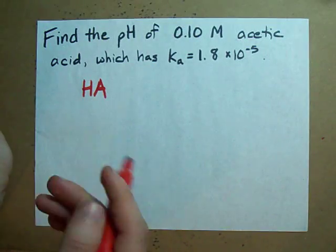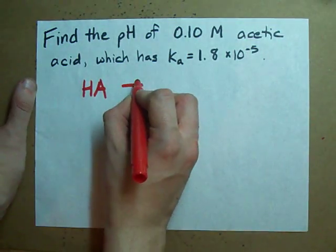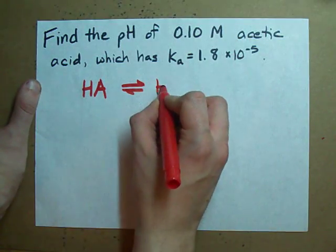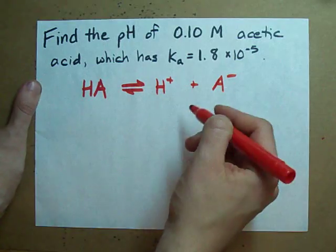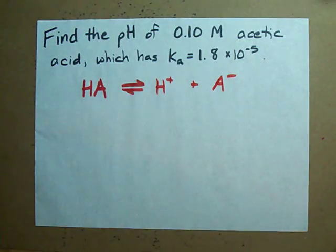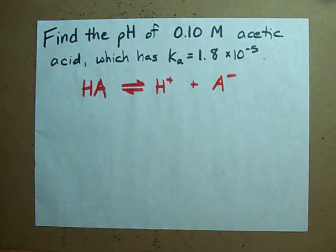I'm just going to call the rest of the molecule A for acid. And HA breaks up into H+ and whatever is left over with a little minus charge on it. This is my dissociation equation.